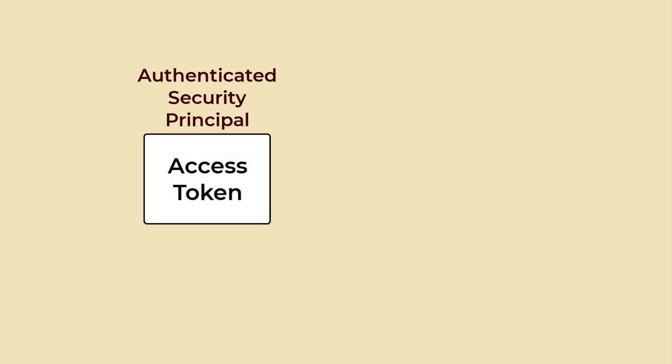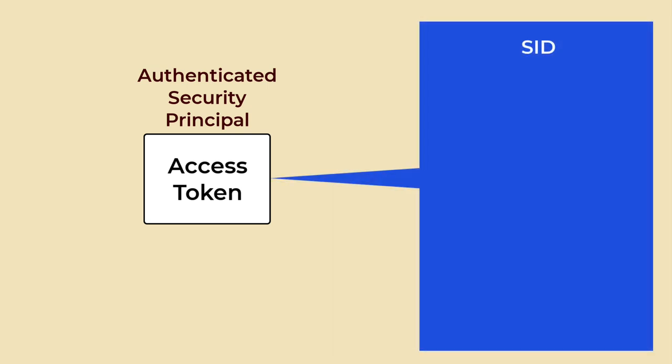Access tokens are another key component of the SRM's operation. An access token is a data structure that contains information about a subject's identity and privileges. When a user logs on to a machine or via a domain controller, an access token is created. The access token includes a Security Identifier (SID), a unique identifier for the user's account which the system uses to identify the user and control access to resources. Group SIDs are the SIDs for the groups to which the user belongs.